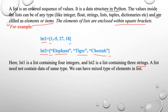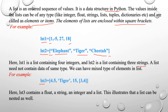A list need not contain data of the same type — we can have mixed types. For example, list3 = [4.5, 'tiger', 15, [3, 4]]. list3 contains a float (4.5), a string ('tiger'), integers (15), and a nested list [3, 4]. This illustrates that lists can be nested as well. The indexing values for list3 are: 4.5 at index 0, tiger at index 1, 15 at index 2, and [3, 4] at index 3.